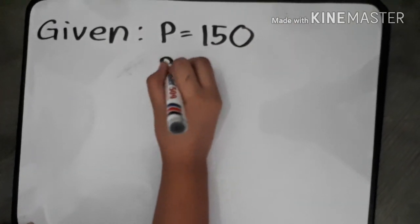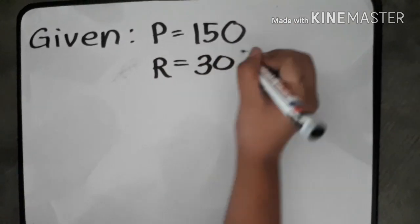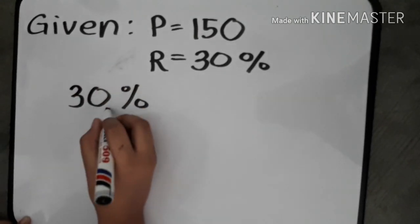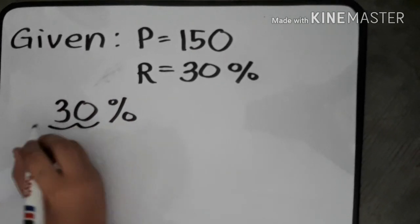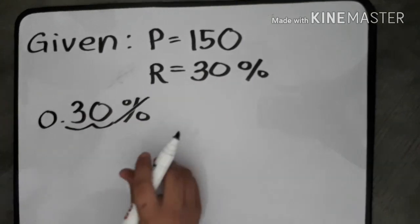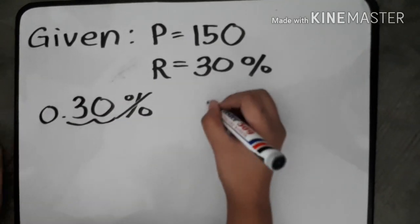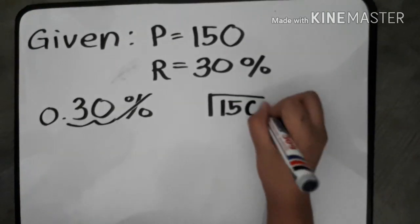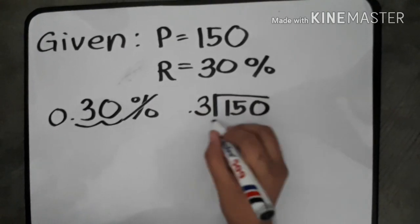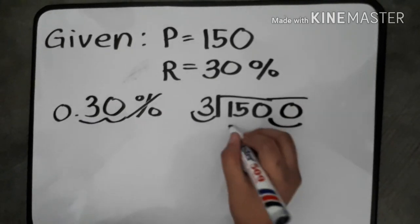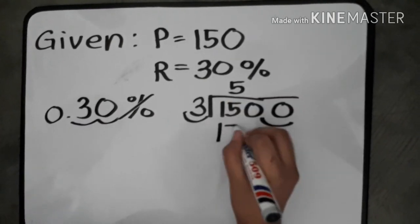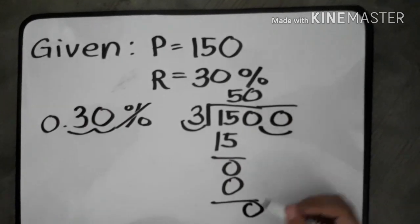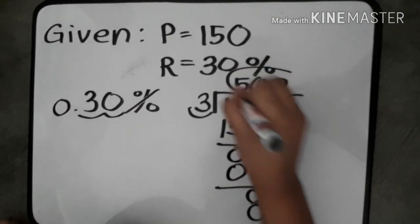Moving on to base, all we have to do is divide the given, which is 150 as our percentage and 30% as our rate. Cancel the percent sign and convert the percent to decimal before you proceed. The quotient of 150 divided by 0.3 is 500.